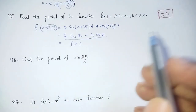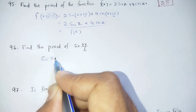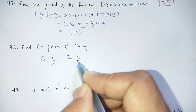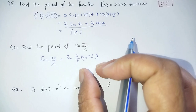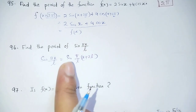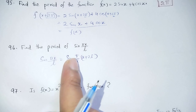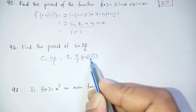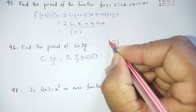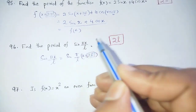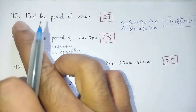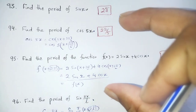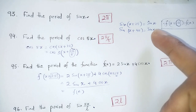Find the period of sin(πx/l). Since sin is a function with period 2π, we write sin(π(x + 2l)/l) = sin(πx/l + 2π) = sin(πx/l). So the period of sin(πx/l) is 2l. This covers questions 93 to 96 on how to calculate the period of a specific function.